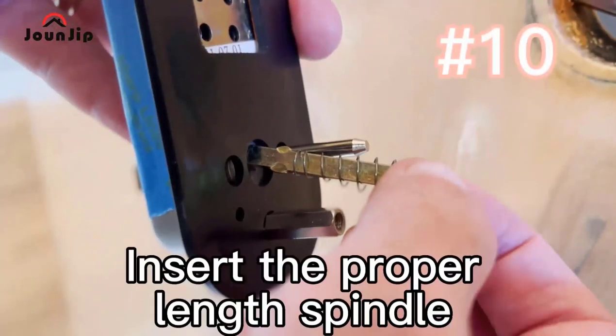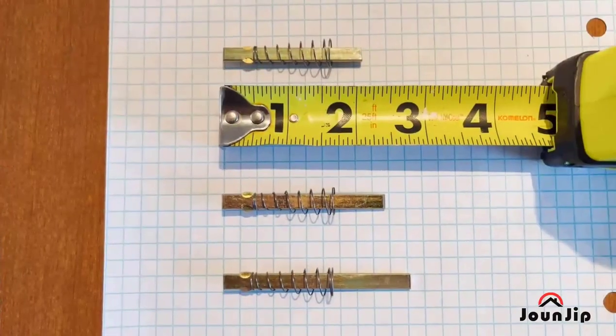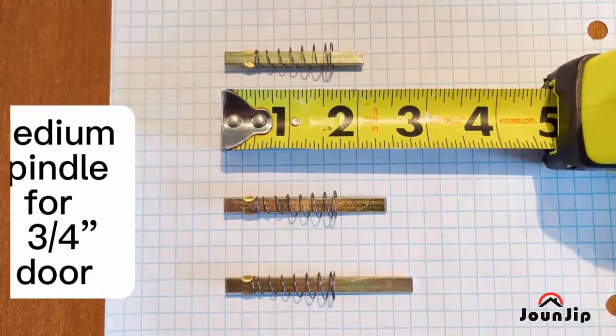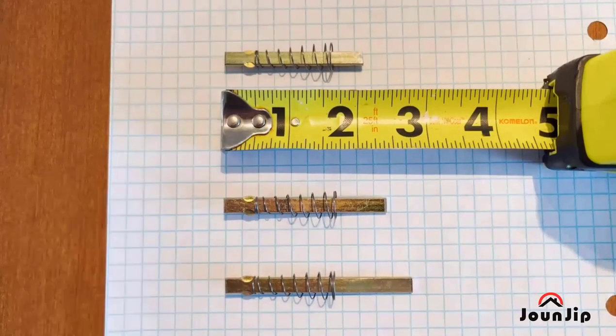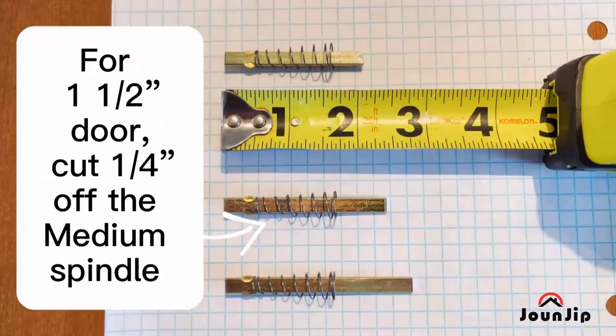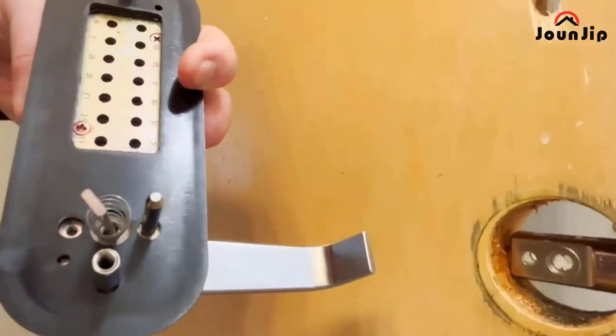Number ten: insert the proper line spindle. First, measure the door thickness, and then choose for either one and three eighths inch door, one and three quarters inch door, or two inch door. If you have a one and a half inch door, cut a quarter inch off the medium spindle. For doors thicker than two inches, you'll need to order longer spindles on Amazon.